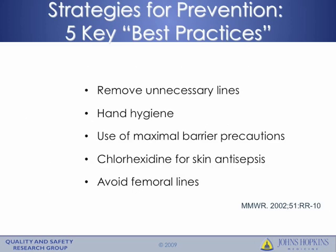To review, the five key strategies for prevention of CLABSIs are: remove catheters when they're not needed, perform vigilant hand hygiene when placing and maintaining catheters, use maximal barrier precautions both for the provider placing the catheter and for the patient, use chlorhexidine preferentially for skin antisepsis, and avoid catheters in the femoral site.